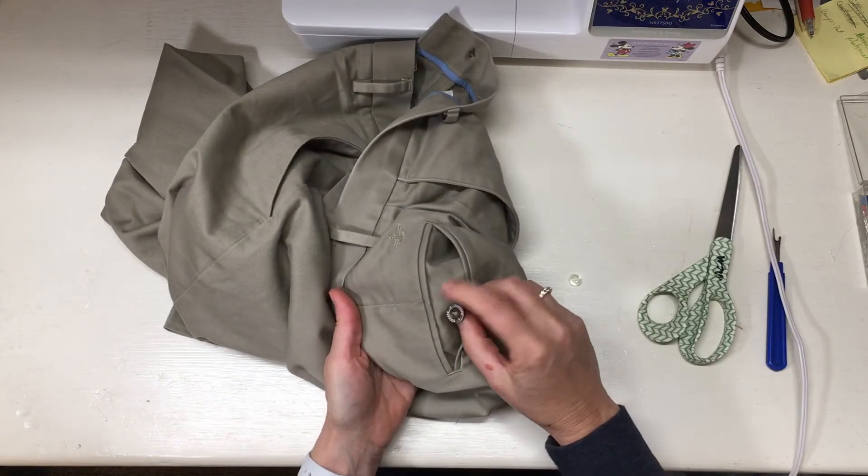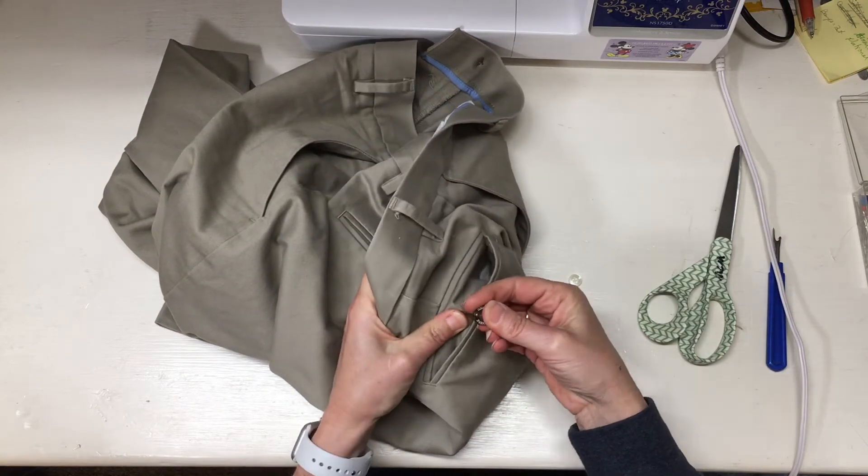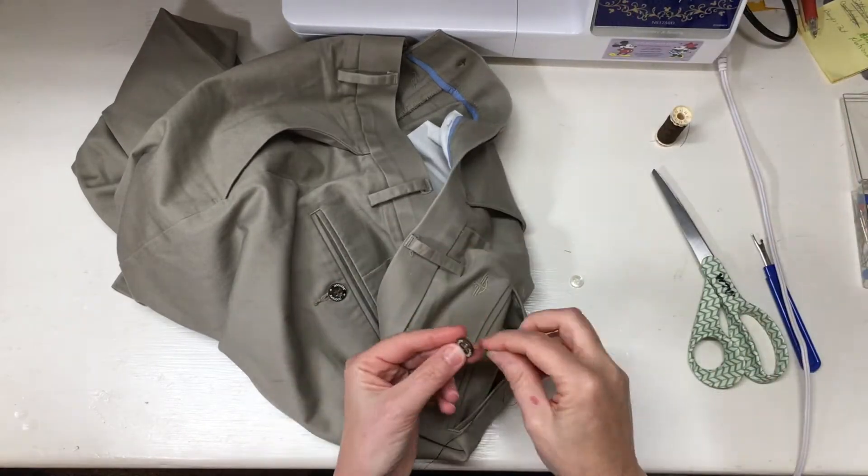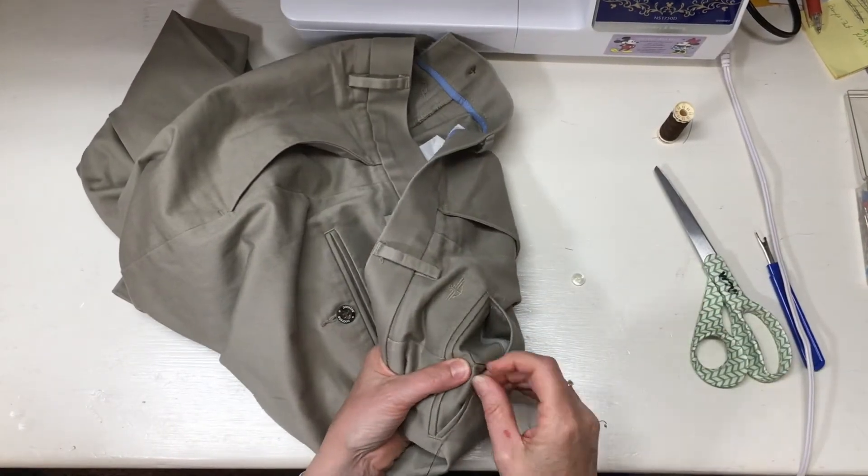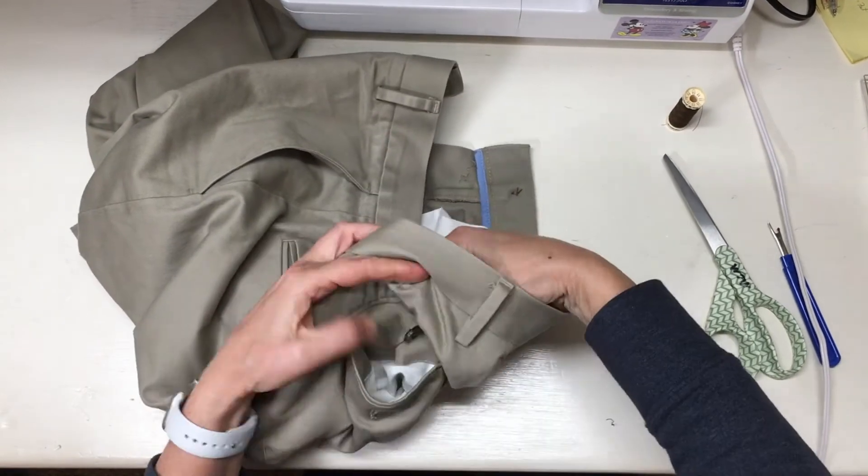If you have pants with a dangly button, I hate dangling. Pull that off and sew it back on there tight. Same thing. In and out the button, down and through the fabric, back and forth three times one way.